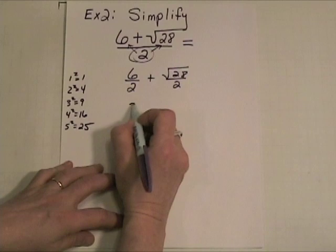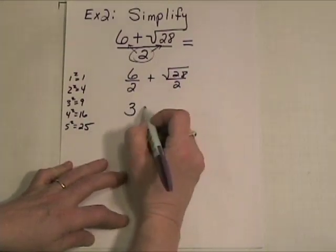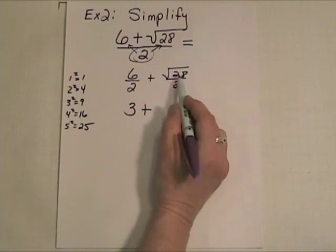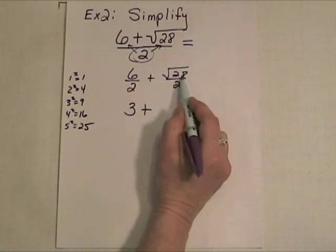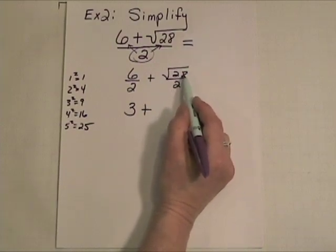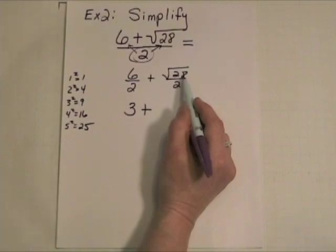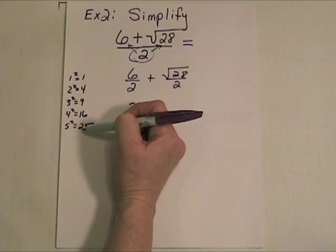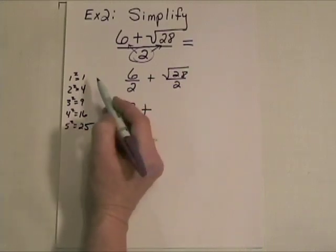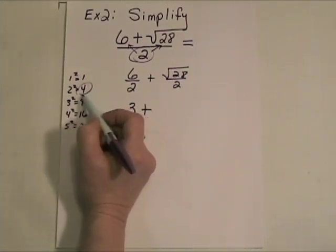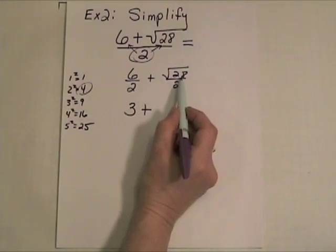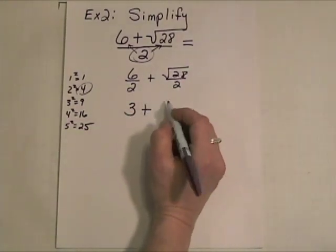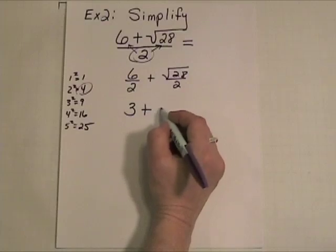Now, 6 over 2 reduces very nicely to a just plain old 3. Now, let's take a look here at this. 28. That is not a perfect square, but does it perhaps have a perfect square factor? Well, over here we have our perfect squares, a few of them listed. And by George, by Jingo, it looks to me like 4, which is a factor of 28, can be square rooted out. Let's take a look.